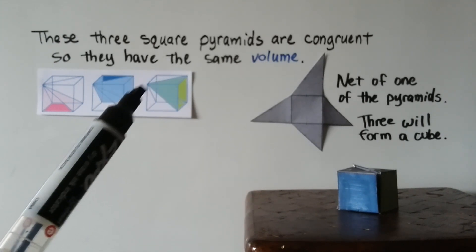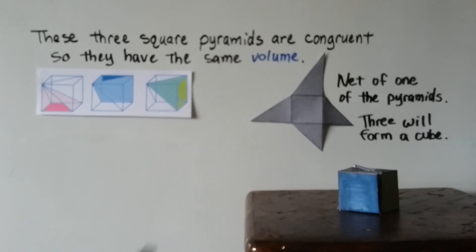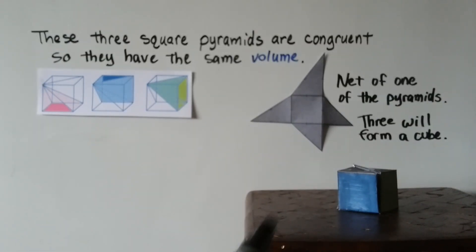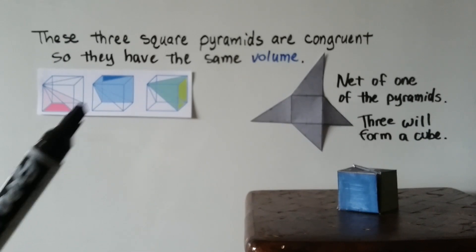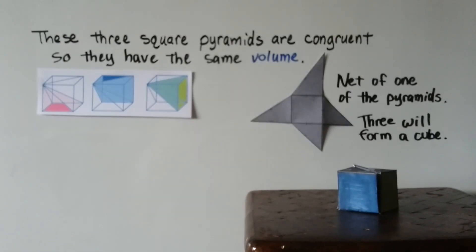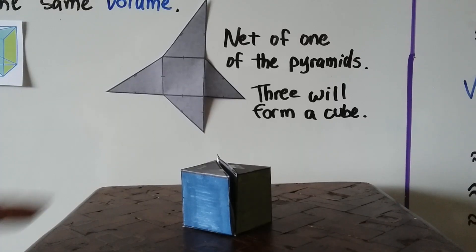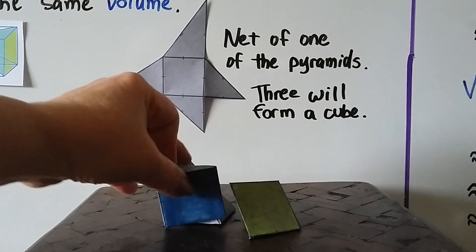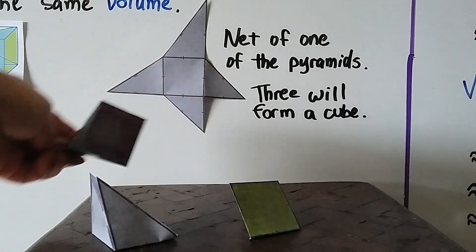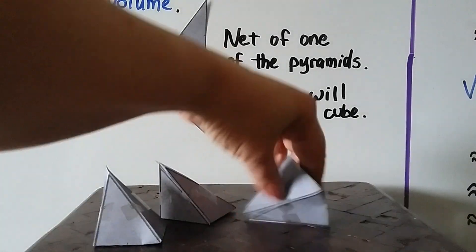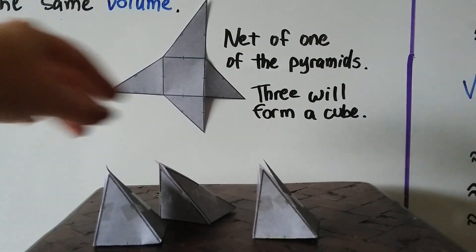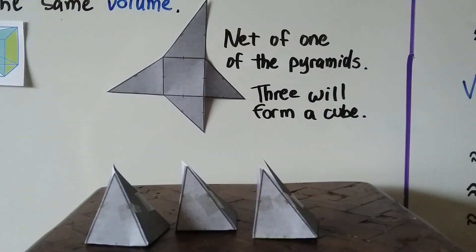Here we have a net of one of these pyramids — it's an unfolded pyramid — and three of these will form a cube. I actually made three of these: one with a pinkish base, one with a blue base, and one with a lime green base. I taped them together, and here's the result with all three bases visible. They're all identical, and if I put them together, I can make a cube.